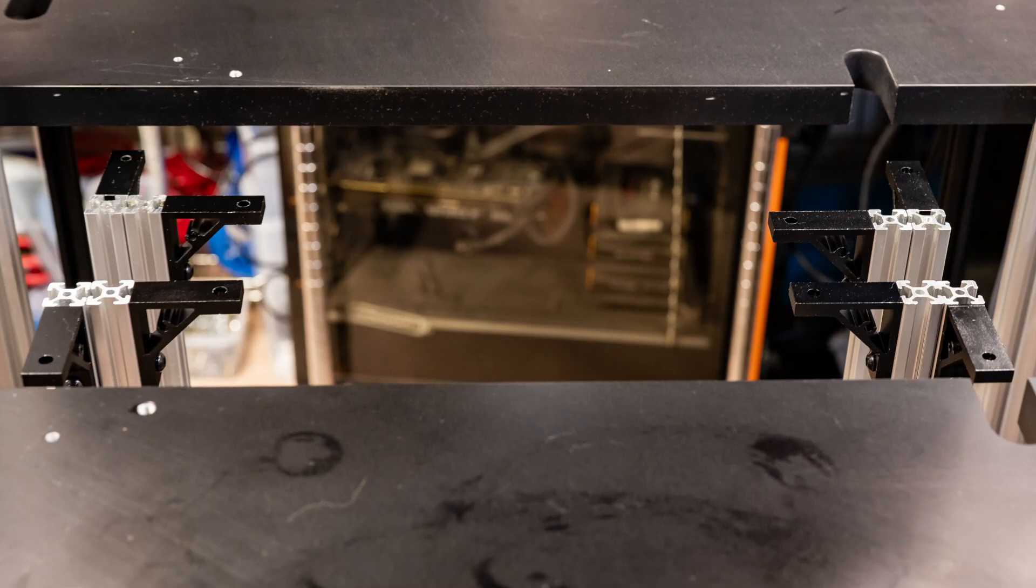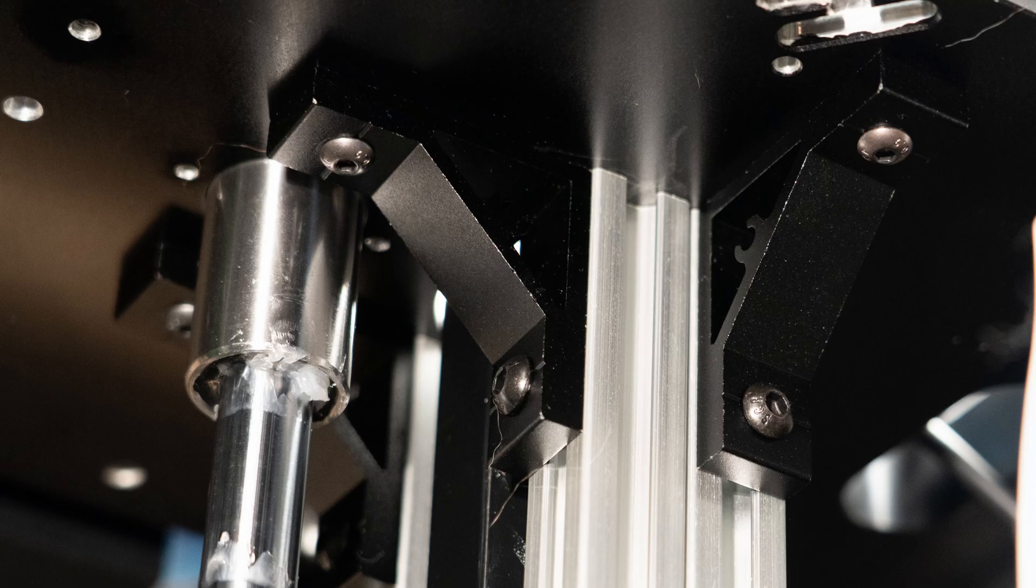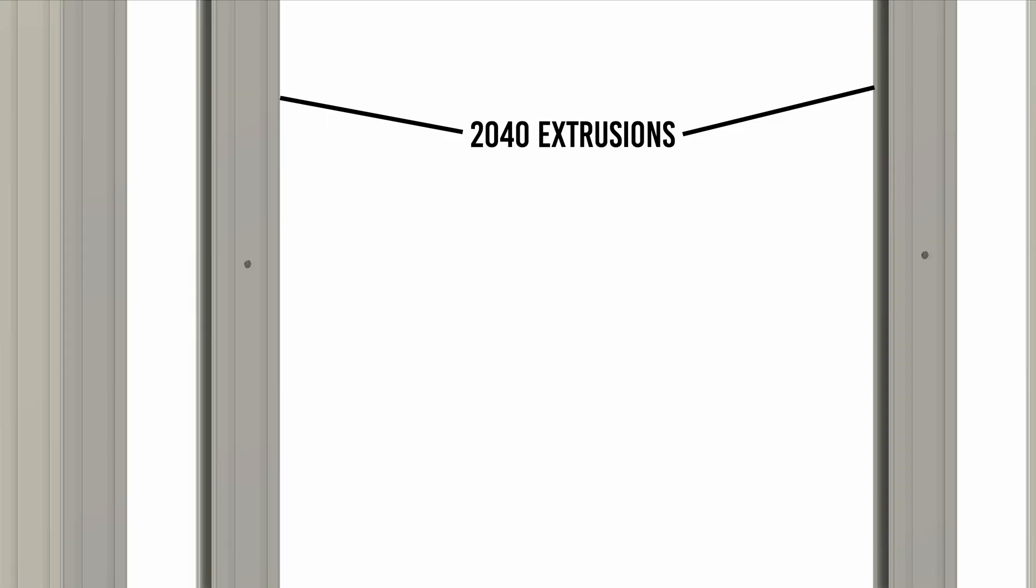Specifically, these 4 extrusion uprights here that butt up against and attach to the bottom of the base plate. The lower end of the actuators are pinned to these uprights, and they run all the way to the bottom where they attach to this cross brace here. I designed it for 20-40 extrusions here, with the dowel holes through their centers for attaching the actuators.